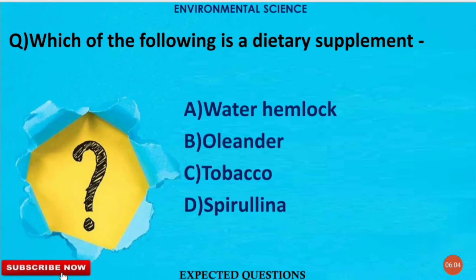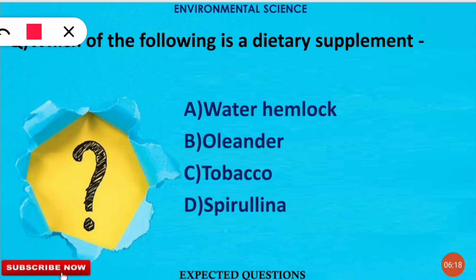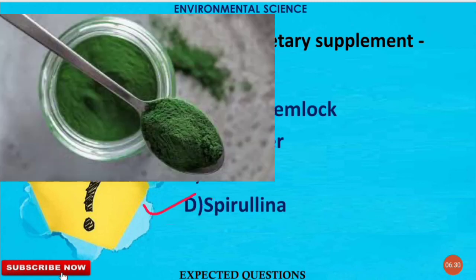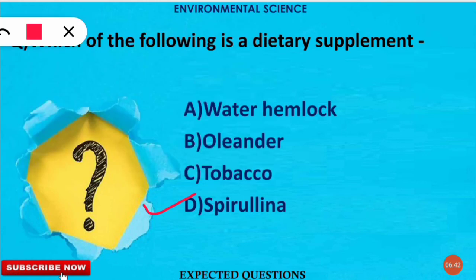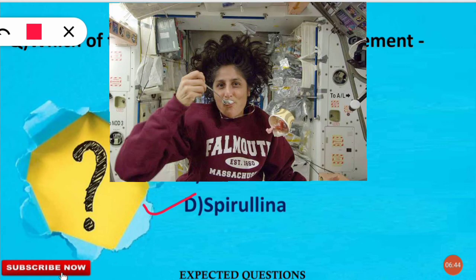The next question is: which of the following is a dietary supplement? The correct option is D — Spirulina. This is covered in 11th and 12th class textbooks. Spirulina is part of the blue-green algae group and became famous as a dietary supplement after it was successfully used by NASA as a food supplement for astronauts.